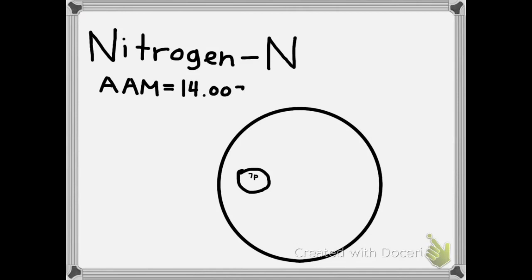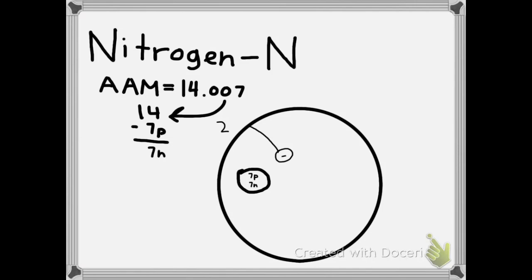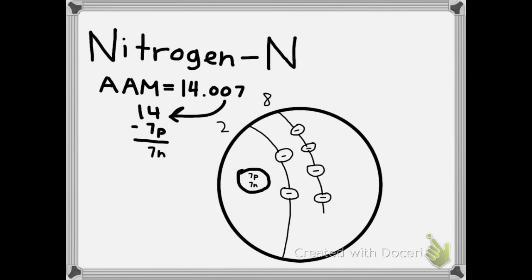The average atomic mass is 14.007, that I will subtract by 7 protons, which is 7 neutrons. I will then put 2 electrons, followed by 5 electrons, which is the same amount as the 7 neutrons.